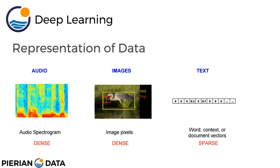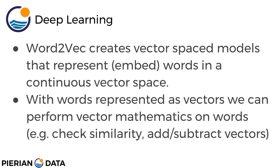Instead, you just get information about the frequency of these words showing up in a document. Word2Vec tries to solve this problem by creating a vector-spaced model that embeds words into a continuous vector space. With words represented as vectors, we can do really cool things like perform vector mathematics on words. You can check how similar two vectors are using cosine similarity — checking how close two words are to each other — and you can actually add and subtract vectors together, meaning you can technically add and subtract words to get different results.